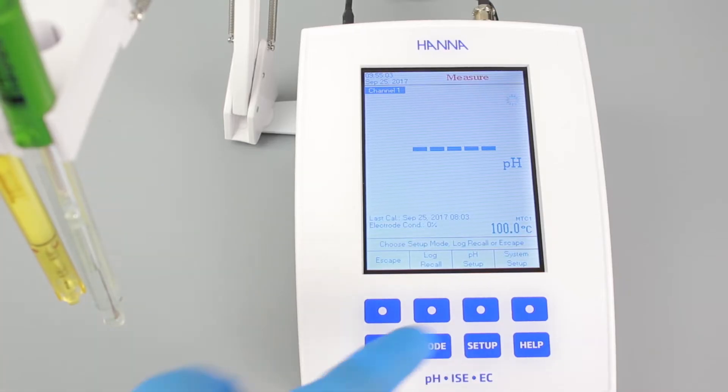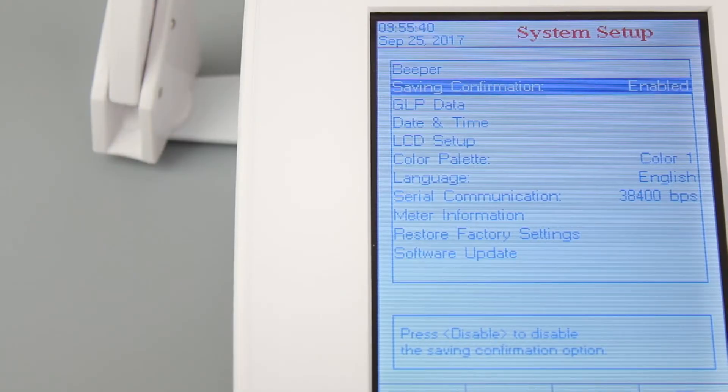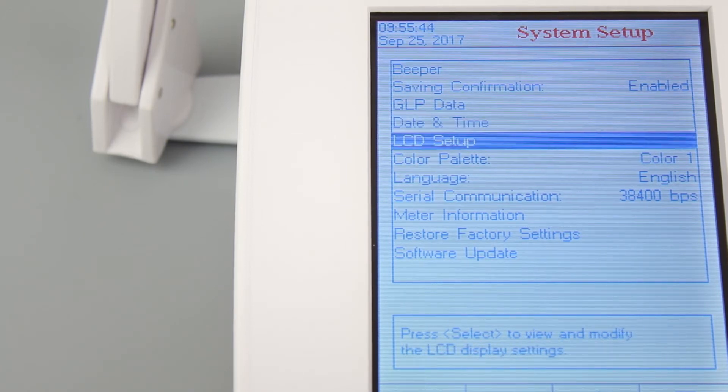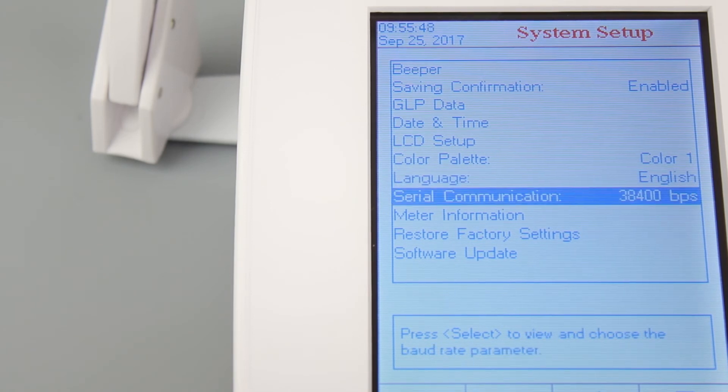Once the meter is on, you'll find that there are many different options to choose from. We recommend starting with the System Setup. Press the Setup button and then System Setup. This area of the menu lets you set the date and time, GLP data, and LCD settings. You can also view information about your meter and other operational preferences that you can set to your liking.